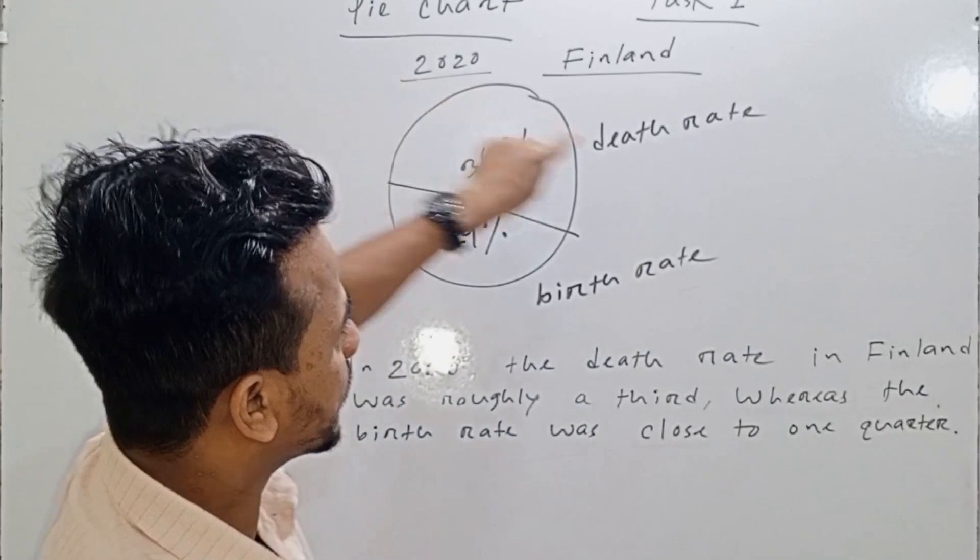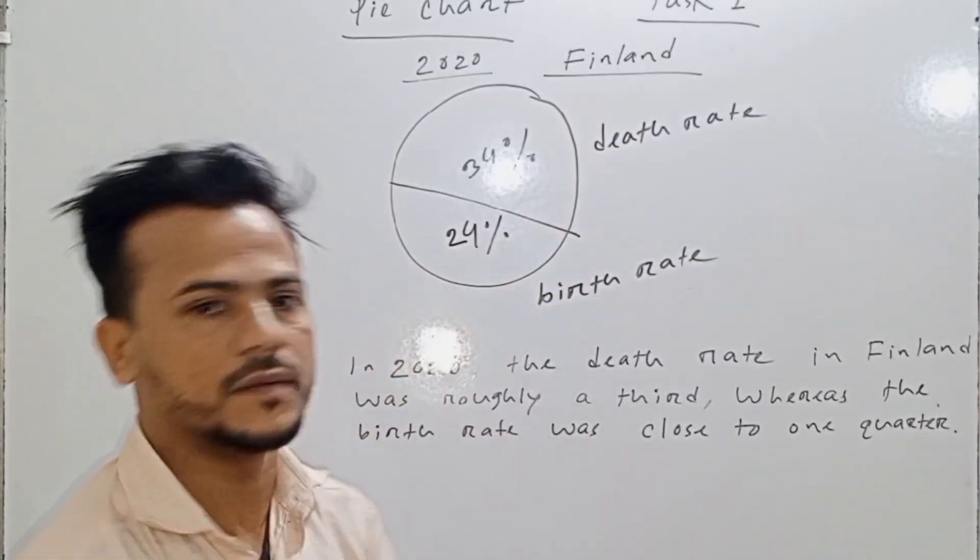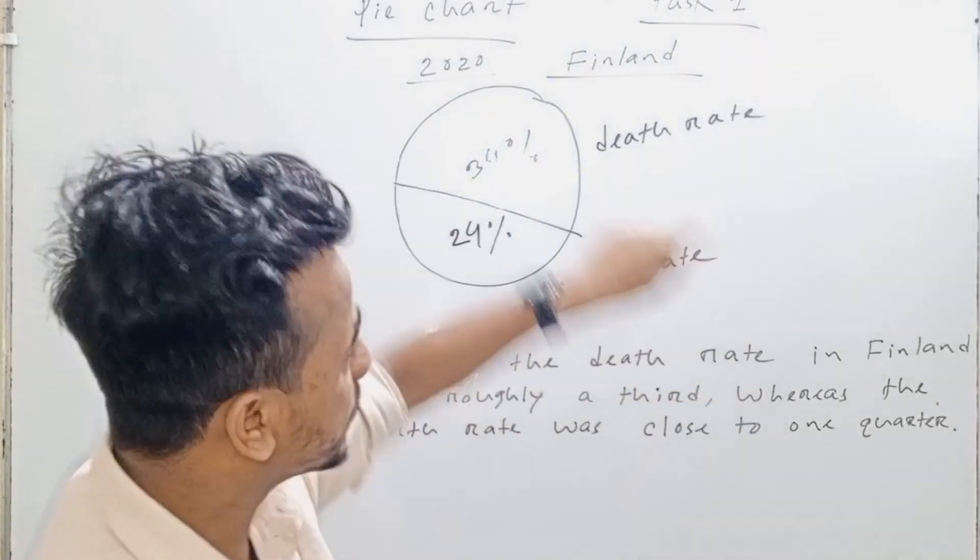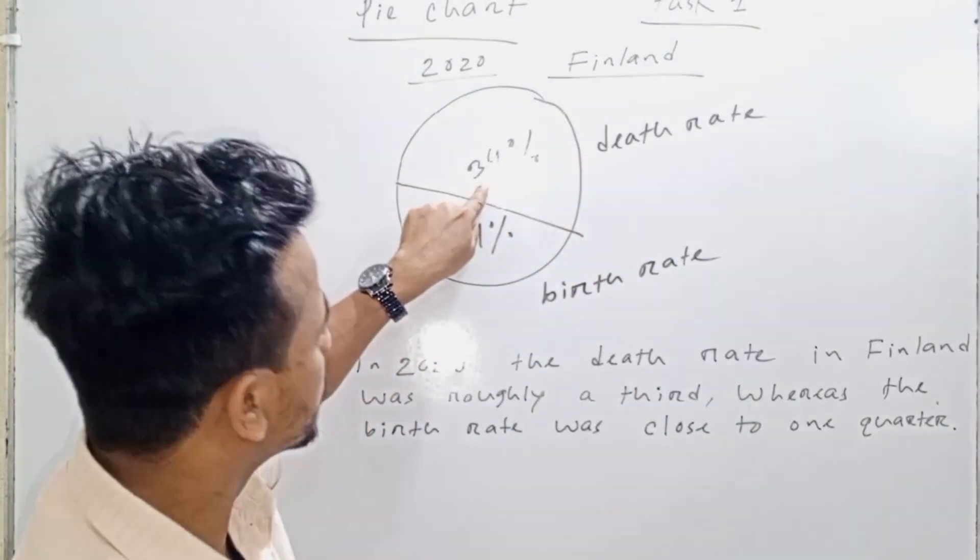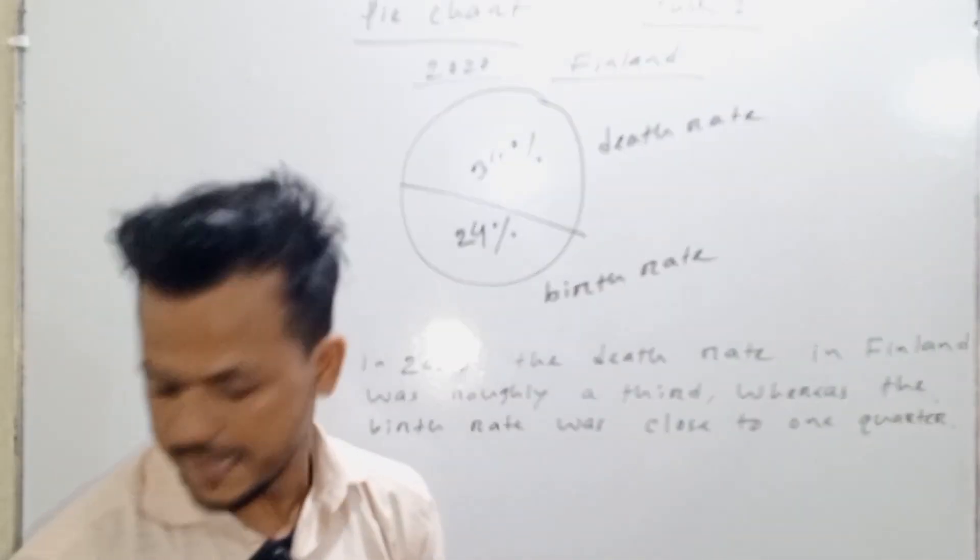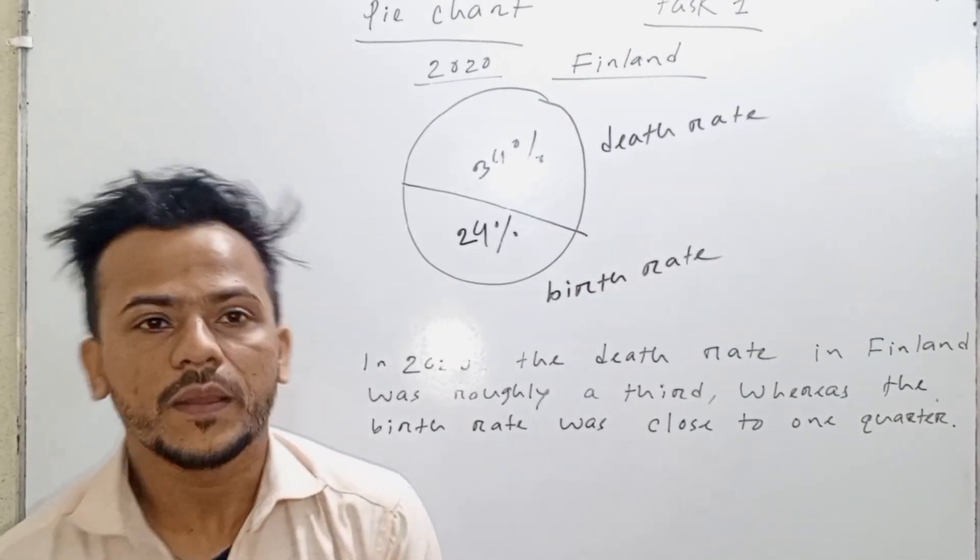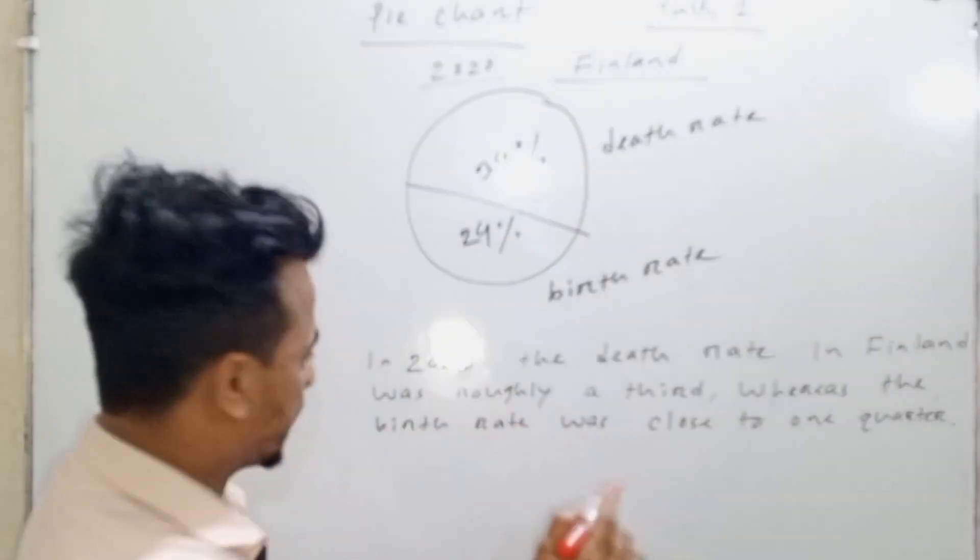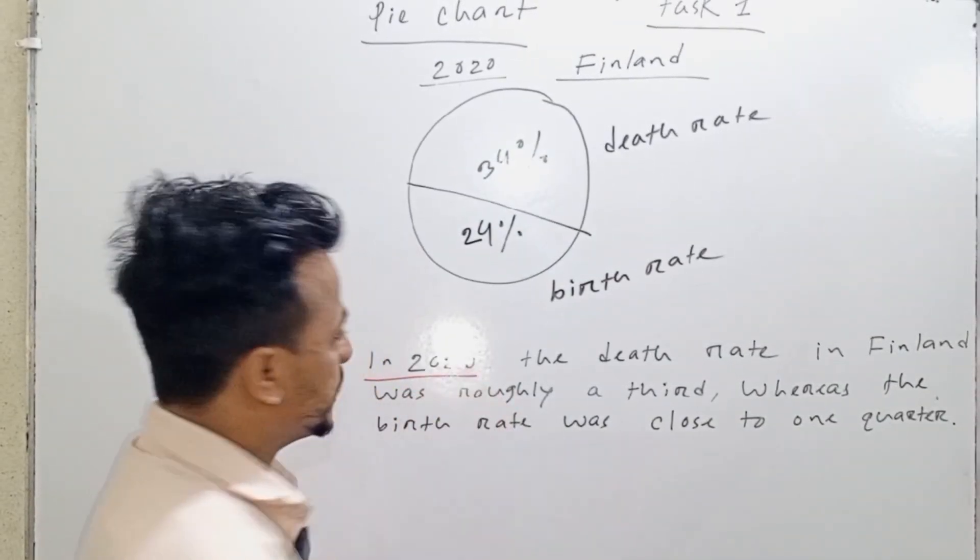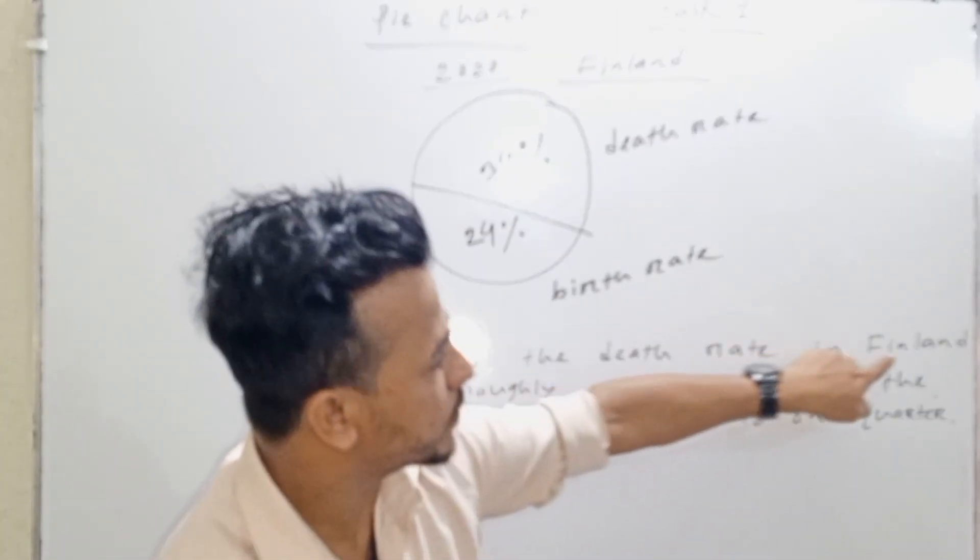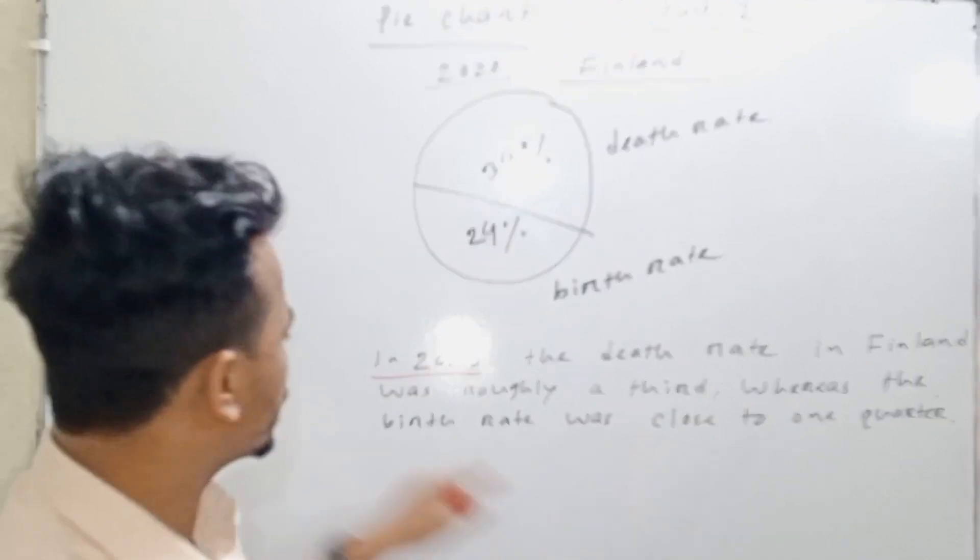In Finland, 2020, death rate and birth rate. In 2020, Finland's death rate is 34%. The birth rate is 24%. The death rate in Finland.